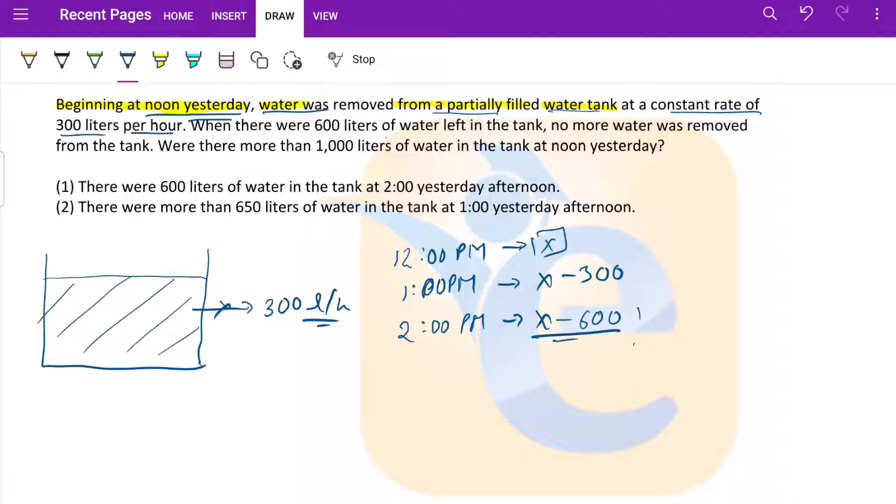When there were 600 liters of water left in the tank, the water kept on decreasing and finally reached a level of 600 liters, and no more water was removed. At 600 this was stopped. So whenever this value, basically x minus n (hours into 300), reached 600, the flowing was stopped.